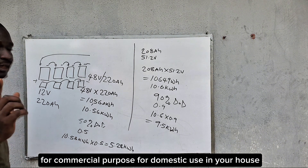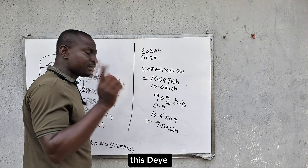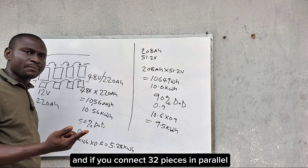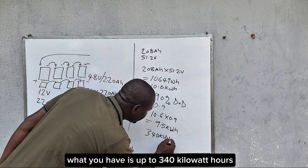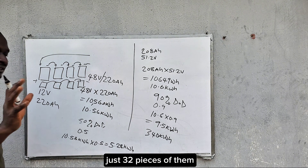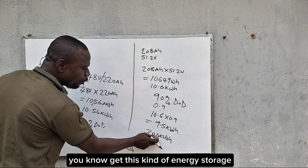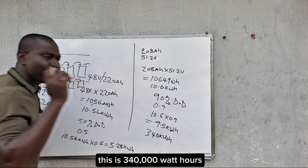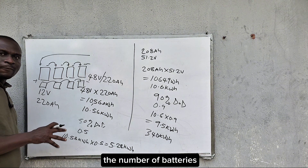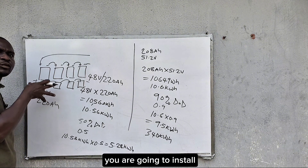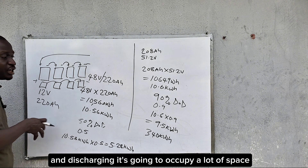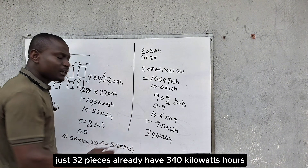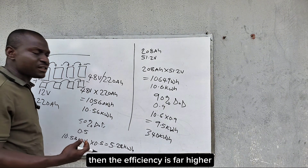For this 10.6 kilowatt hour lithium battery, you can connect up to 32 pieces in parallel. If you connect 32 pieces in parallel, you have 340 kilowatt hours — that is 340,000 watt hours. Imagine trying to achieve that energy storage with lead acid batteries: the number of tubular batteries would be enormous, occupying a lot of space with a lot of weight and inefficiencies in charging and discharging. But with lithium, just 32 pieces gives you 340 kilowatt hours at far higher efficiency.